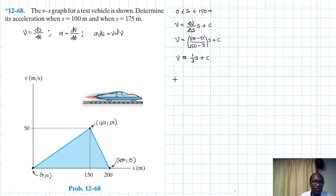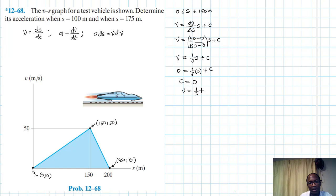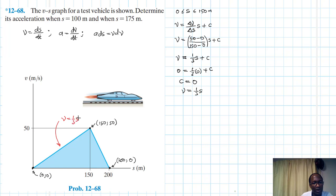That gives us 1/3 times s plus c. Plugging in the coordinate (0, 0), we find that c equals 0. So the equation for the first interval is v = (1/3)s.